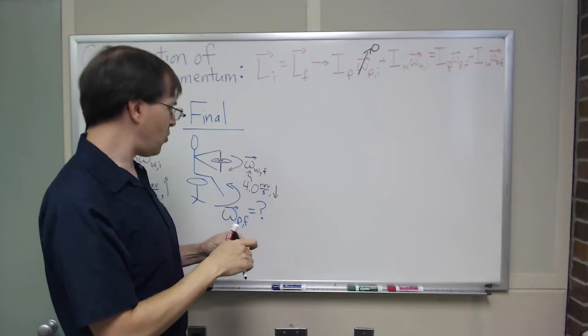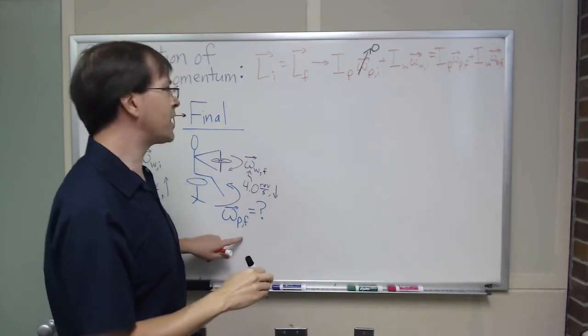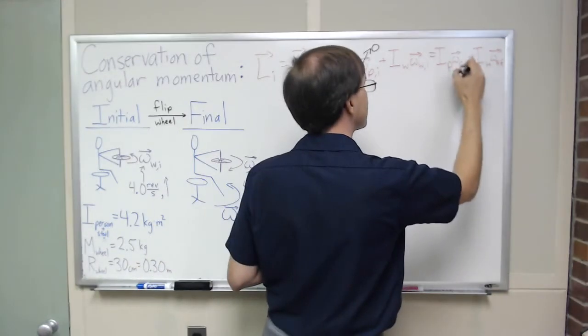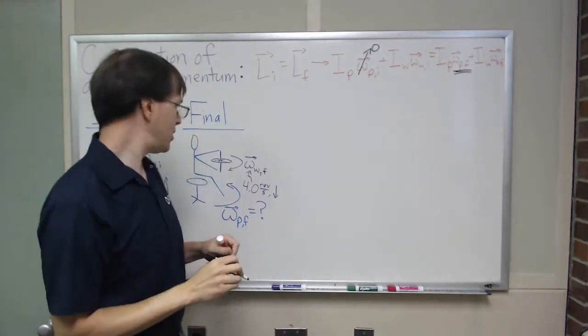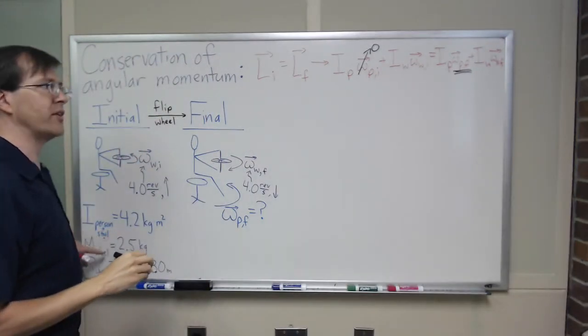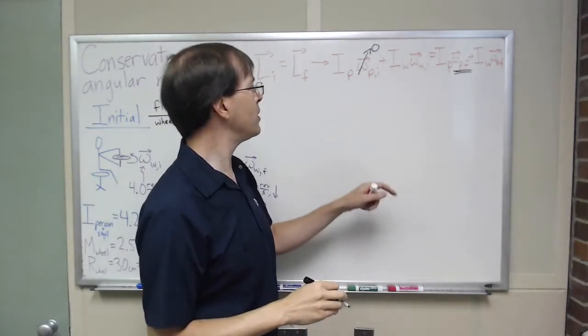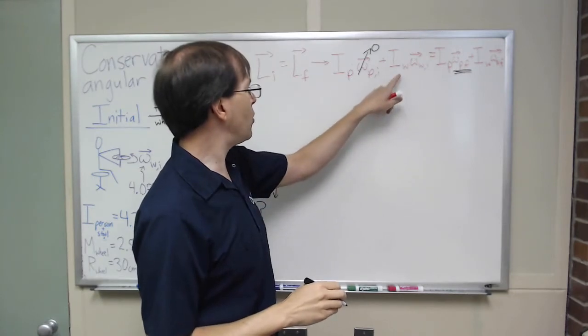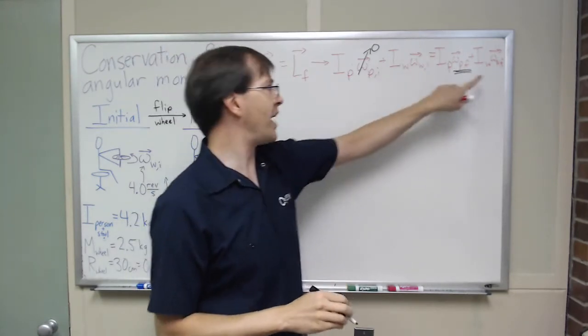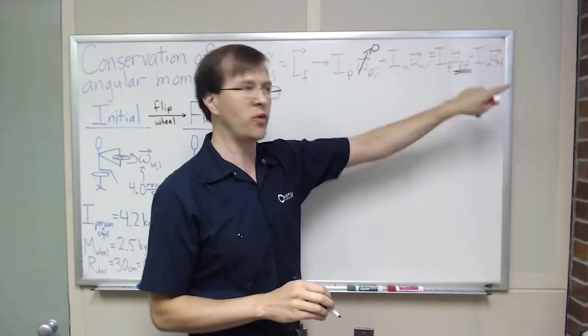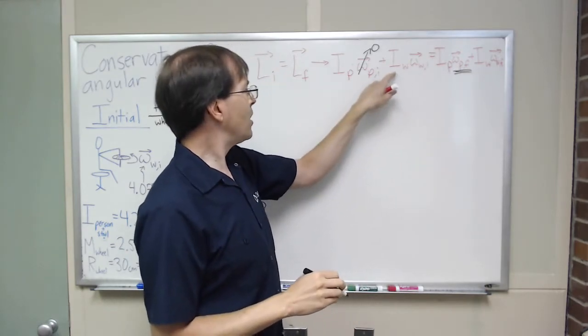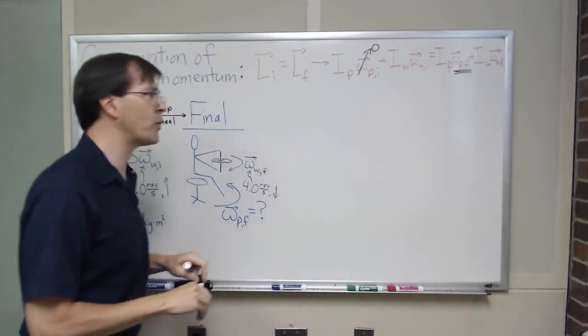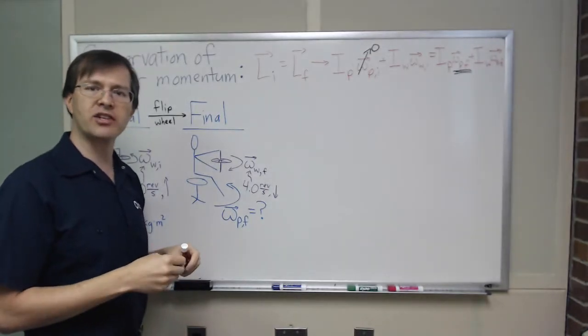In all this, my unknown, my ultimate unknown is omega person final. So this is the term I'm solving for. I person and stool and everything else was given. So that's known. So what I really need, I need to know, omega wheel initial and final are given. I know their magnitudes and directions. So in the end, if I can find the moment of inertia of the wheel, I'll be in good shape to solve this problem.